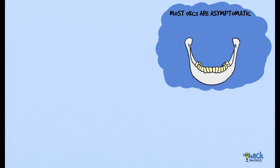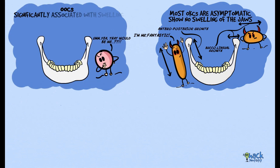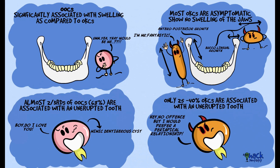Most odontogenic keratocyst patients are asymptomatic and show no swelling of the jaws. This is attributed to the antero-posterior growth pattern of odontogenic keratocyst as opposed to bucco-lingual expansion. Ortho-keratinized odontogenic cysts, on the other hand, are significantly associated with swelling of jaws. Almost two-thirds, or at least 68%, of ortho-keratinized odontogenic cysts are associated with an unerupted tooth, mimicking a dentigerous cyst on the radiograph. It is reported that only 25–40% of odontogenic keratocysts may be associated with an unerupted tooth.